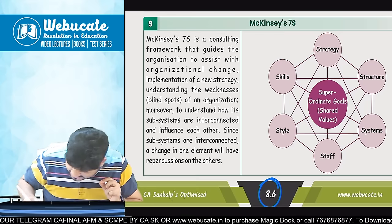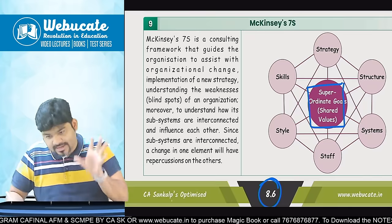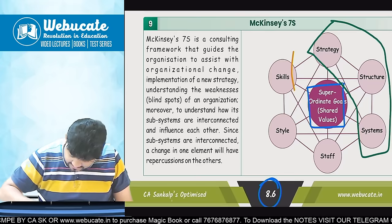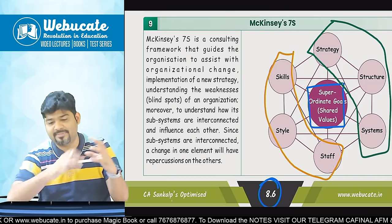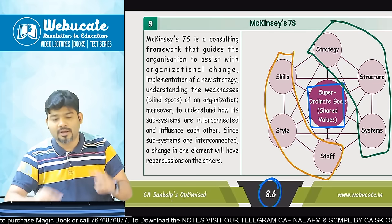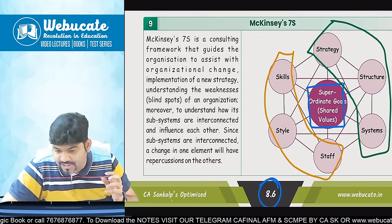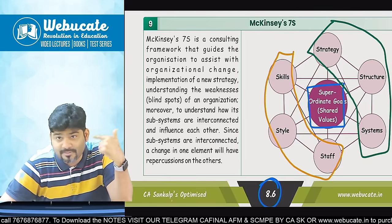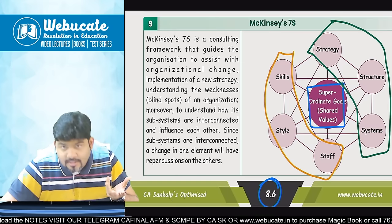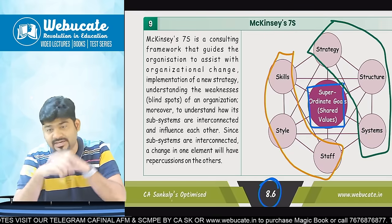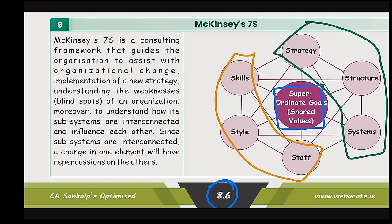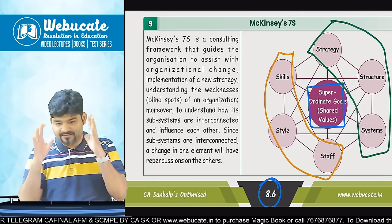In 7S McKinsey, there are shared values at the center, and then there are three concepts called strategy, system, and structure, plus skills, style, and staff — together these make the 7S McKinsey model. I will tell you what each one is and where it is used. All these concepts are used in an organization where they are trying to implement a new change, a new organization is going to be started, or they are planning to acquire a new company. In such situations, 7S McKinsey can be used very widely.